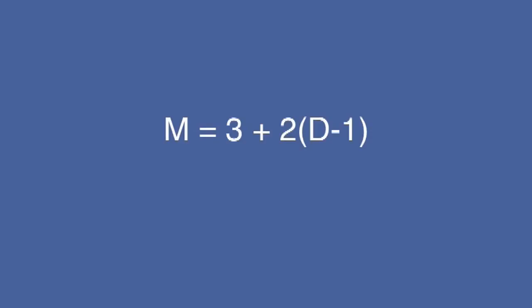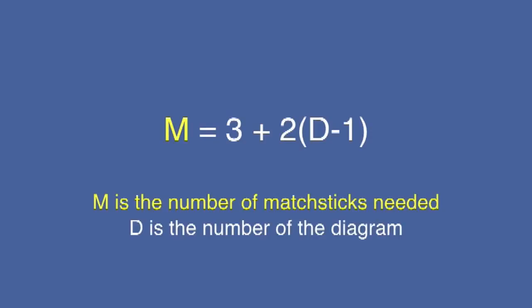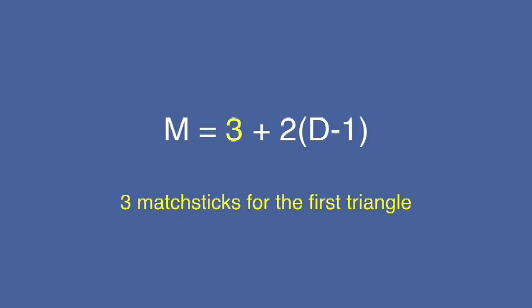m equals three plus two times d minus one, where m is the number of matchsticks required and d is the number of the diagram. What this means is that the number of matchsticks needed for a diagram is equal to three matchsticks for the first triangle, plus two more for every extra triangle that we're going to have to add on.